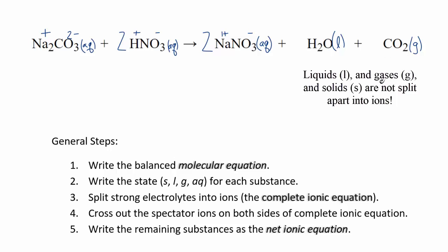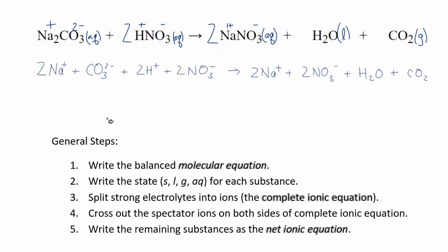So we write the complete ionic equation with all strong electrolytes split into their ions, while water (liquid) and CO₂ (gas) remain intact. You can check it's correct because it should be balanced — same number of each atom on both sides. Now we cross out the spectator ions, which are the ions that appear unchanged on both sides, meaning nothing happened to them.